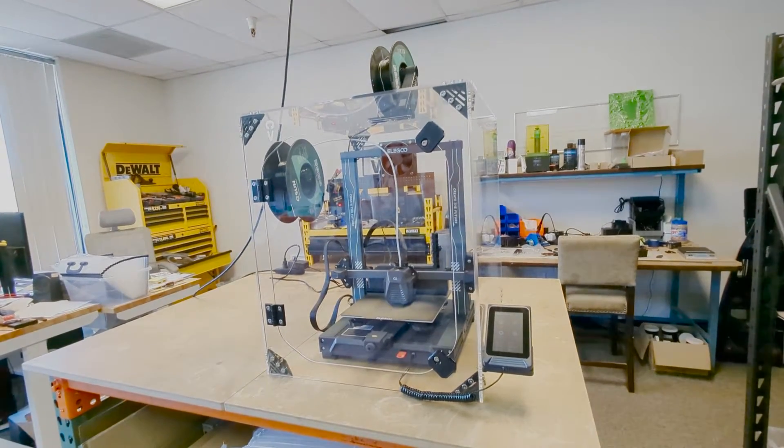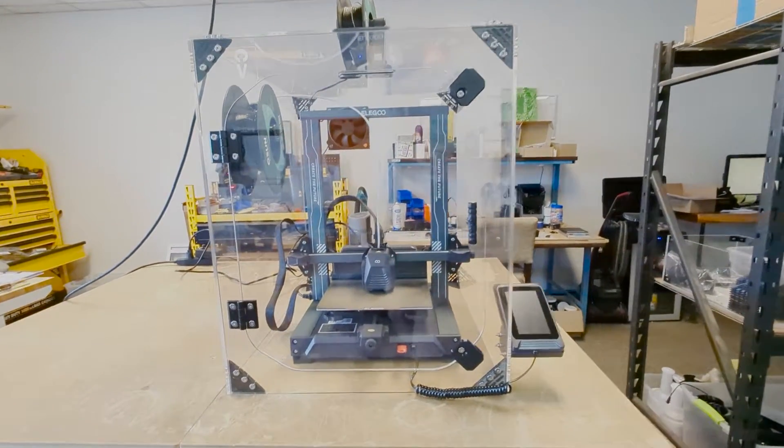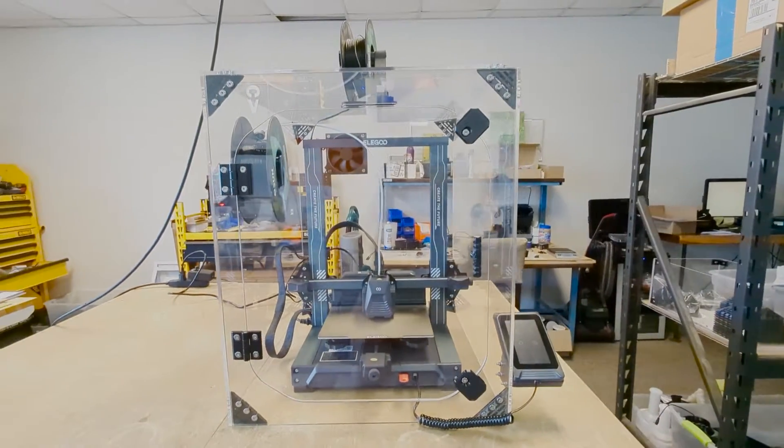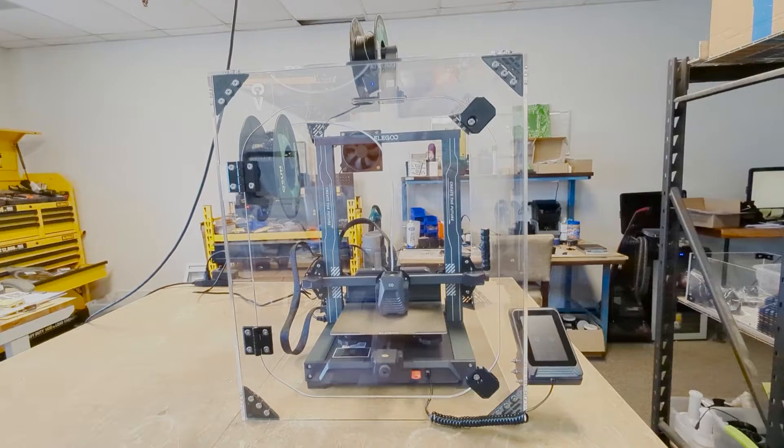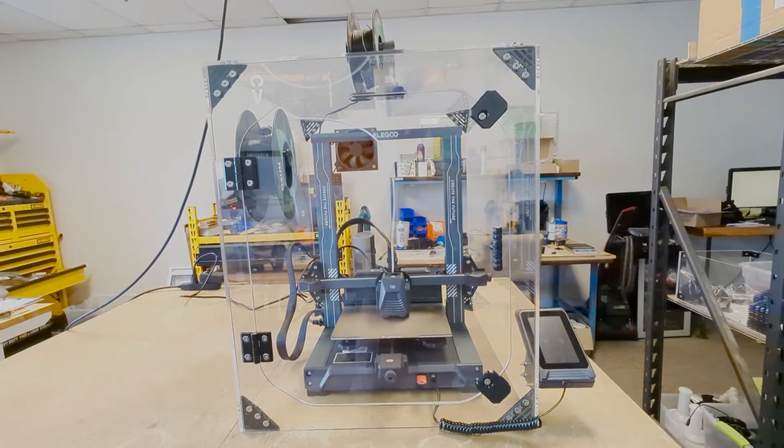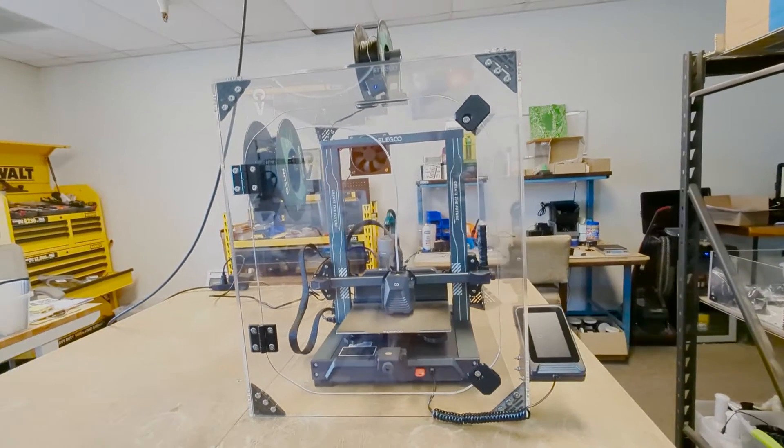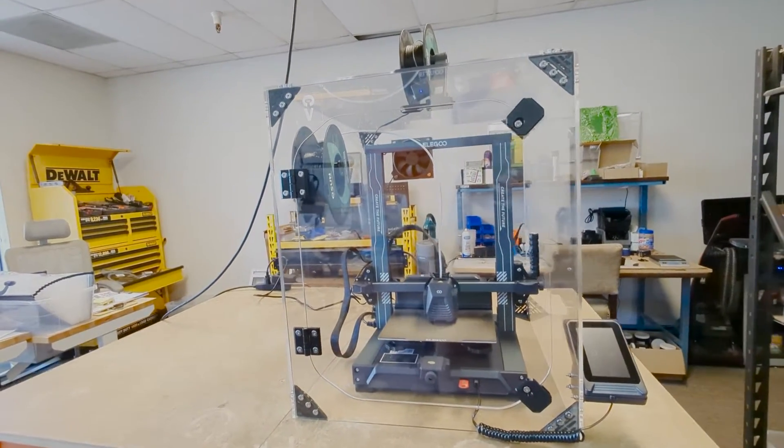A few things that we did that make this enclosure rad is that we just made it kind of the right size to fit the Elegoo Neptune 4 lineup. So you don't get too much added size so that you get good heat retention. And at the same time, it gets a great look. It doesn't take up too much desk space outside of the printer in and of itself.